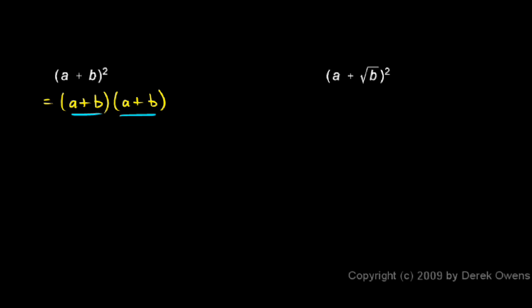And we multiply one binomial times another by doing a FOIL, F-O-I-L: first, outer, inner, last.